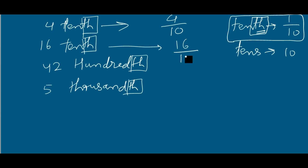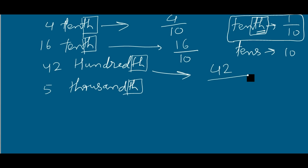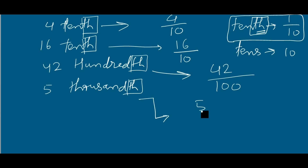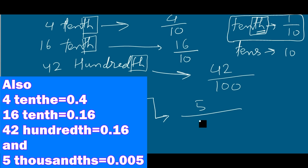Sixteen-tenth means you write sixteen at the numerator and ten at the denominator. Forty-two hundredths: you write forty-two in the numerator and hundred at the denominator. And five-thousandths: you write five at the numerator and one thousand at the denominator.